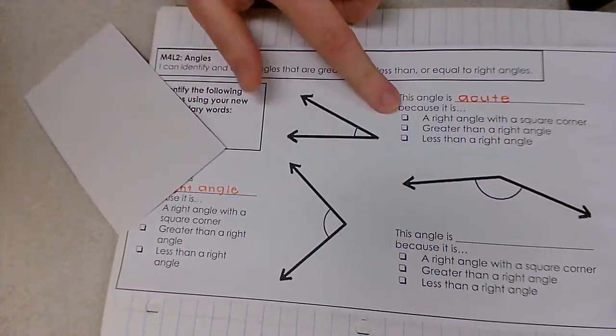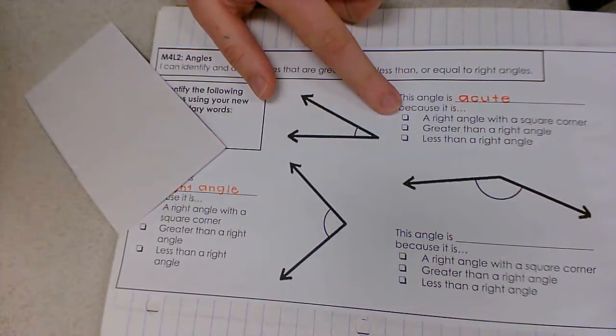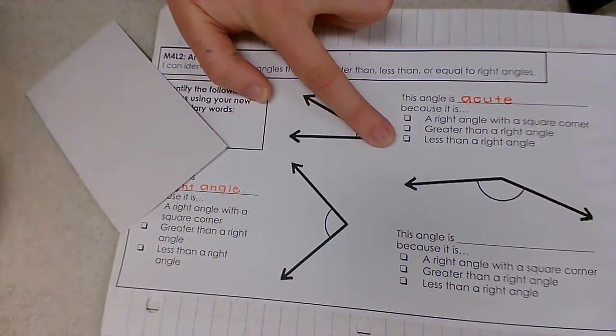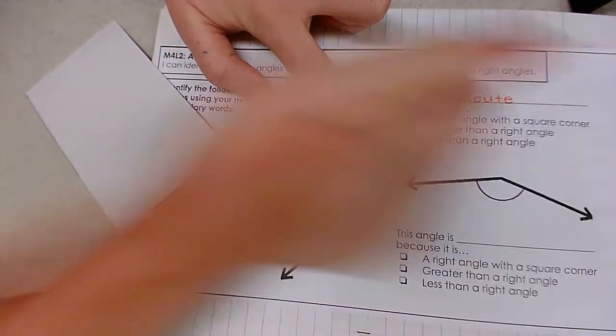Because it is a right angle with a square corner. Nope. Greater than a right angle. Nope. Less than a right angle.